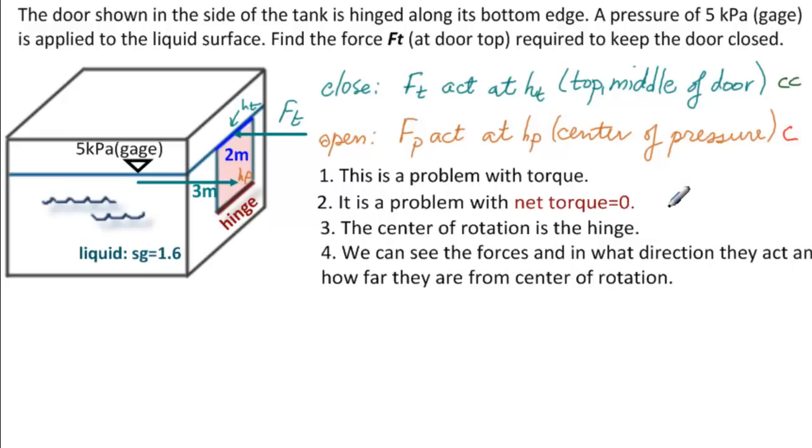Then we can use our standard formula for torque. Torque is equal to force times distance. These are positive, these are negative. We want the net torque to be zero. That's why this problem is in this section, because we need to find the force of the liquid acting on the door and the center of pressure.